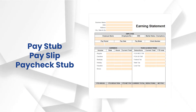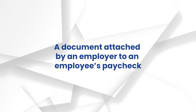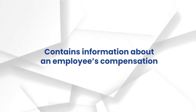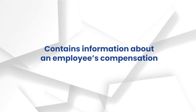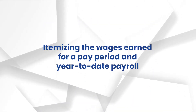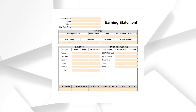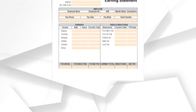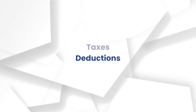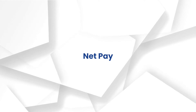A pay stub, payslip, or paycheck stub is a document that an employer attaches to an employee's paycheck on a payday. It contains information about an employee's compensation, itemizing the wages earned for a pay period and year-to-date payroll. Pay stubs may be electronic or printed. Nevertheless, it must show taxes, deductions, contributions, and the net pay or amount the employee receives.